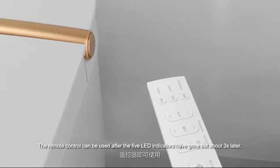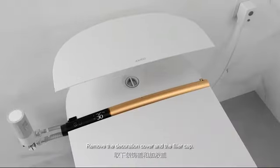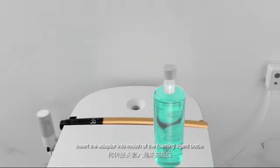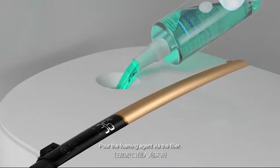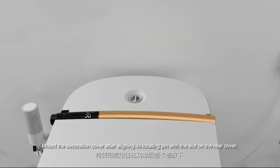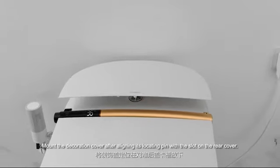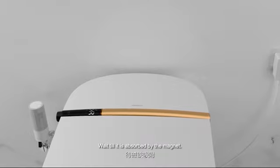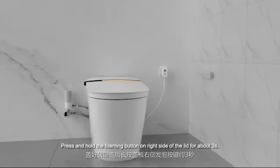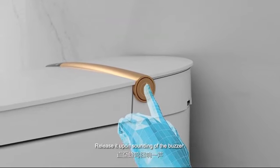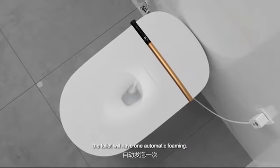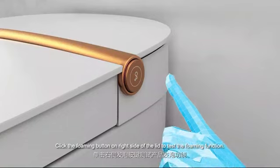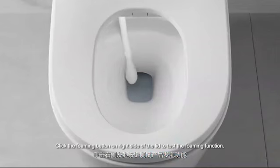Six: add foaming agent. Remove the decoration cover and the filler cap. Insert the adapter into mouth of the foaming agent bottle. Pour the foaming agent via the filler. Mount the filler cap. Mount the decoration cover after aligning its locating pin with the slot on the rear cover. Wait till it is absorbed by the magnet. Press and hold the foaming button on right side of the lid for about 3 seconds. Release it upon sounding of the buzzer. About 30 seconds later, the toilet will have one automatic foaming. Click the foaming button on right side of the lid to test the foaming function.